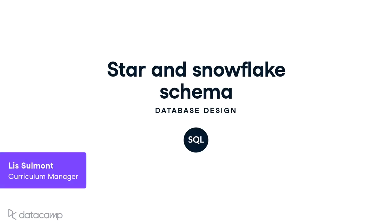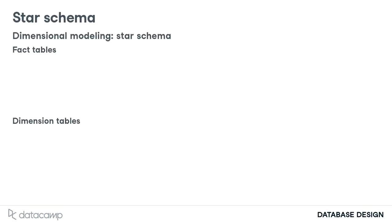Congrats on finishing the first chapter. We're now going to jump in where we left off with the star schema. The star schema is the simplest form of the dimensional model. Some use the term star schema and dimensional model interchangeably. Remember that the star schema is made up of two tables: fact and dimension tables.